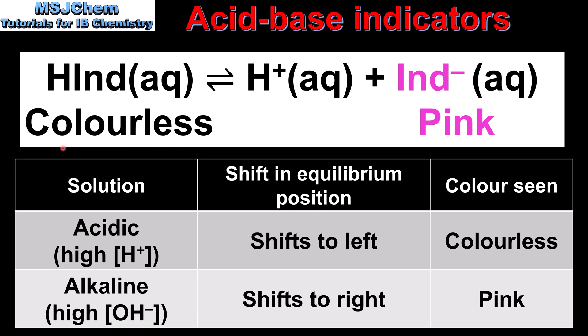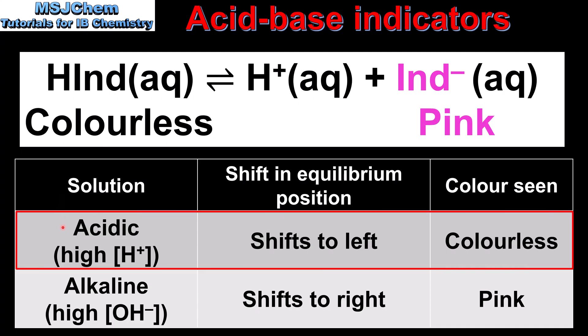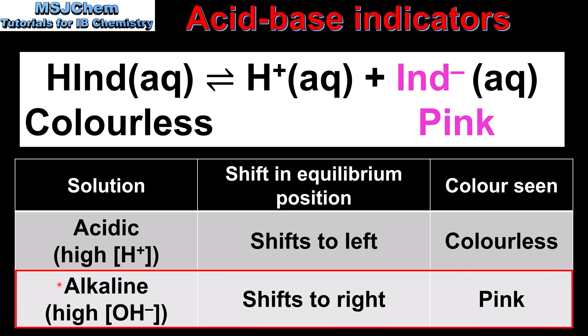So in an acidic solution, phenolphthalein is colorless. In an alkaline solution, which has a high concentration of hydroxide ions, the equilibrium position will shift to the right, in the direction of the ionized form or the conjugate base. This is because the excess hydroxide ions will react with the hydrogen ions, so to produce more hydrogen ions the equilibrium position shifts to the right. So in an alkaline solution, phenolphthalein is pink. This is summarized in the table below: in an acidic solution the equilibrium shifts left and the color is colorless; in an alkaline solution the equilibrium shifts right and the color is pink.